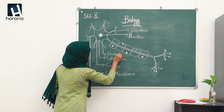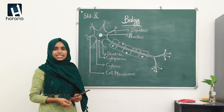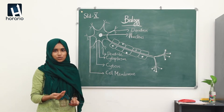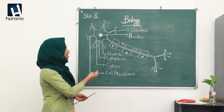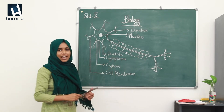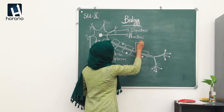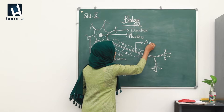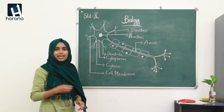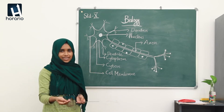This is the dendrite. The peculiarity of the dendron is that it is the shortest filament arising from the cytone. Now we move to the longest filament arising from the cytone, which is known as the axon.